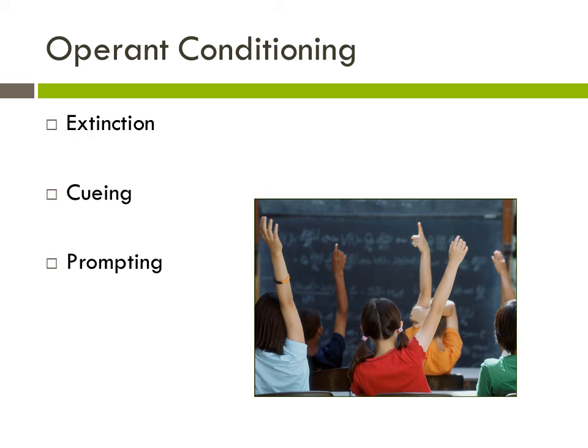Extinction is seen both in classical conditioning and operant conditioning. This reduces a behavior that had previously been maintained or increased — it happens when you stop the reinforcers. Cueing is the idea that there's a stimulus that sets up a behavior. It is an antecedent and it signals what behavior will be reinforced, which is the desired behavior.